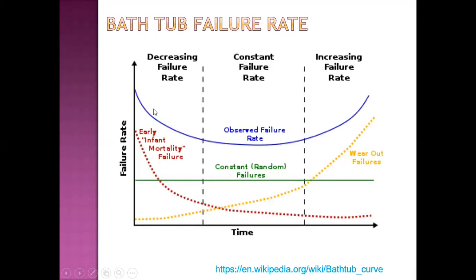The characteristic bathtub failure rate curve is applicable in machine lifecycle analysis. Initially there is infant mortality failure with a decreasing failure rate — most failures detected early are manufacturing defects. Then there is a constant failure rate, which is the most part of machine life. Then there is an increasing failure rate — the wear-out phase of machines. This is very important for machine failure analysis and machine management.